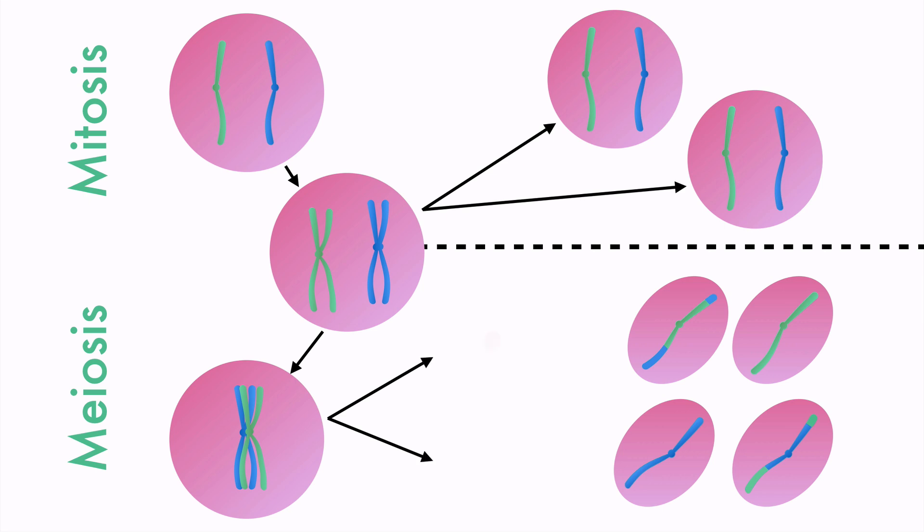The homologous pairs split up in the first division. But in the second division, the chromatids separate into single chromosomes. This gives four totally different cells with half the normal number of chromosomes.